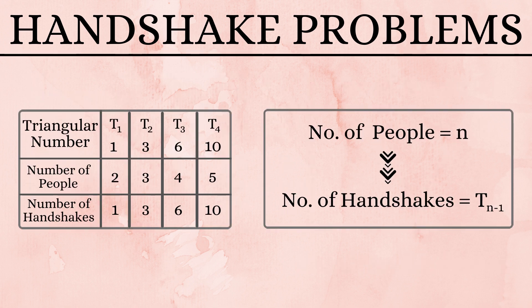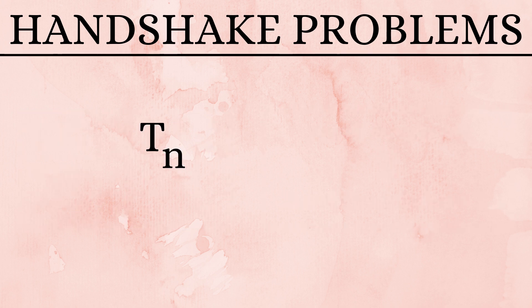To generalize, for n number of people, the number of handshakes is determined by the n-1th triangular number. Let us recollect the formula to find the nth triangular number. It is half of n into n plus 1.